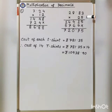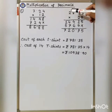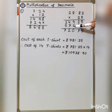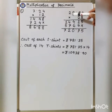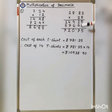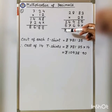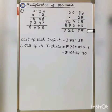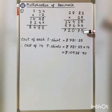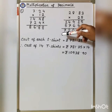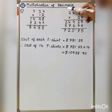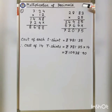Next example: 28.83 multiplied by 25. 5 times 3 is 15, carry 1; 5 times 8 is 40 plus 1 is 41, carry 4; 5 times 8 is 40 plus 4 is 44, carry 4; 5 times 2 is 10 plus 4 is 14. Then 2 times 3 is 6; 2 times 8 is 16, carry 1; 2 times 8 is 16 plus 1 is 17, carry 1; 2 times 2 is 4 plus 1 is 5. Now add: 5, 6 plus 1 is 7, 0, 7 plus 4 is 11 carry 1, 12, 5 plus 1 is 6 plus 1 is 7. There are 2 decimal places, so count 1, 2 and place the decimal point. The answer is 720.75.